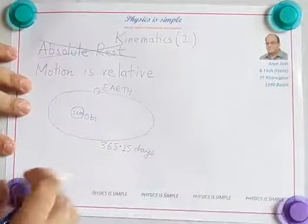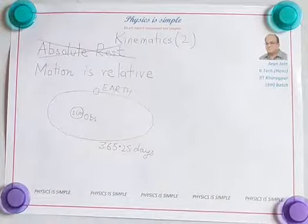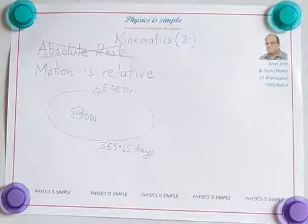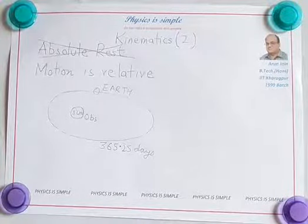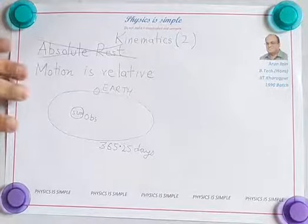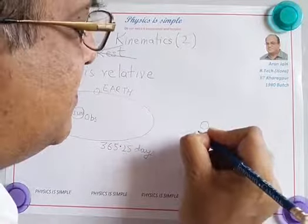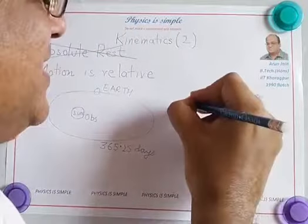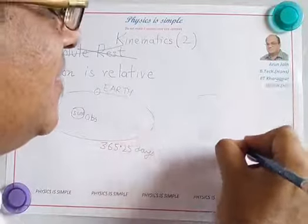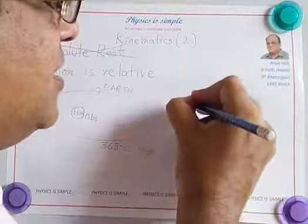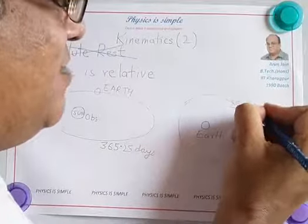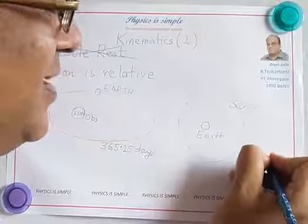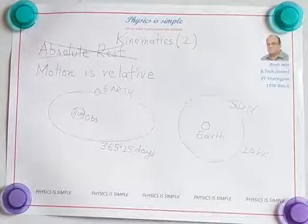The Earth orbits in approximately 365.25 days. So this motion of the Earth is with respect to the Sun, with respect to an observer on the Sun. But what about an observer on the Earth? An observer on the Earth sees the Sun going around the Earth once in 24 hours. This is what we see.